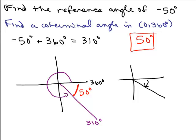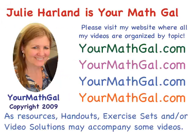The reason people use reference angles is so they can compute trig values without worrying about whether sine, cosine, or tangent is negative until the end of the problem. I'll do some problems like that in the next video. One last thing: most trig books make reference angles seem much more complicated, but it's really just the angle formed between that angle and the x-axis. If you visualize it, it's much easier to see. This is YourMathGal, Julie Harland. Please visit my website at yourmathgal.com where all of my videos are organized by topic.